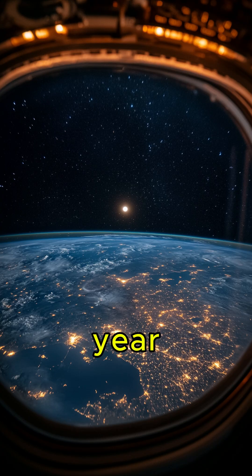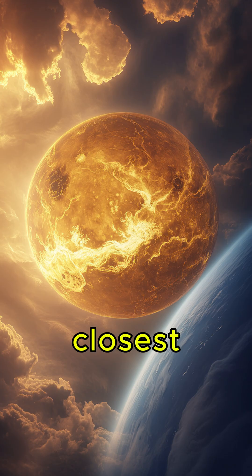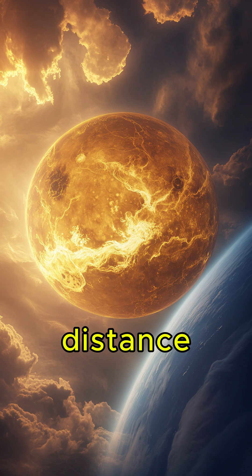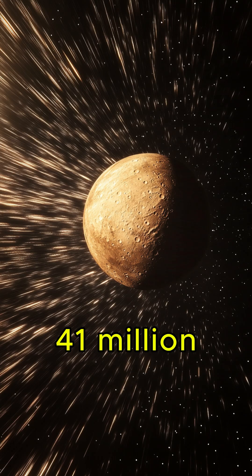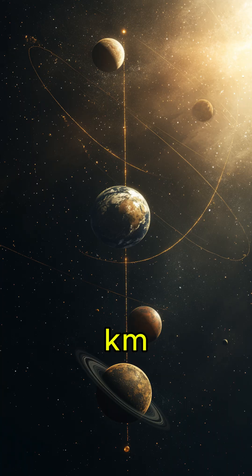Depending on the time of year, Venus or Mars may be the closest. The average distance between Earth and Venus is 41 million kilometers, while the average distance to Mars is 78 million kilometers.